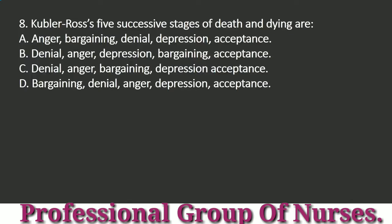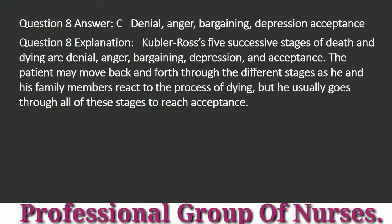Question 8: Kübler-Ross's five successive stages of death and dying are: a. Anger, bargaining, denial, depression, acceptance. b. Denial, anger, depression, bargaining, acceptance. c. Denial, anger, bargaining, depression, acceptance. d. Bargaining, denial, anger, depression, acceptance. Answer: c. Denial, anger, bargaining, depression, acceptance. Explanation: Kübler-Ross's five successive stages of death and dying are denial, anger, bargaining, depression, and acceptance. The patient may move back and forth through the different stages as he and his family members react to the process of dying, but he usually goes through all of these stages to reach acceptance.